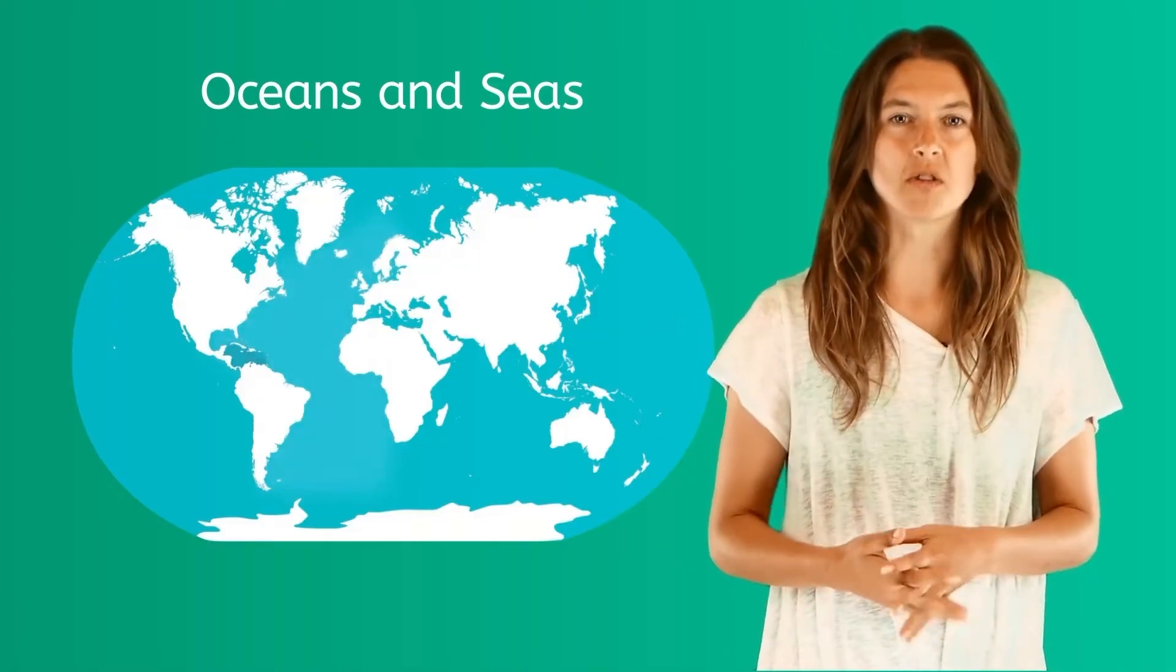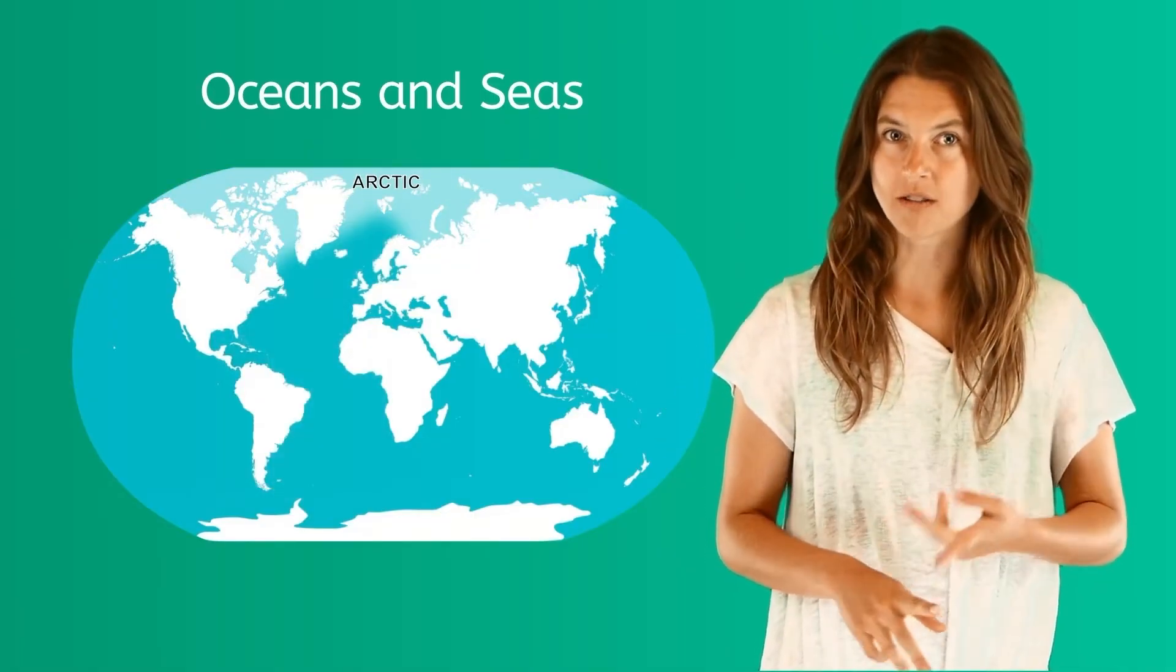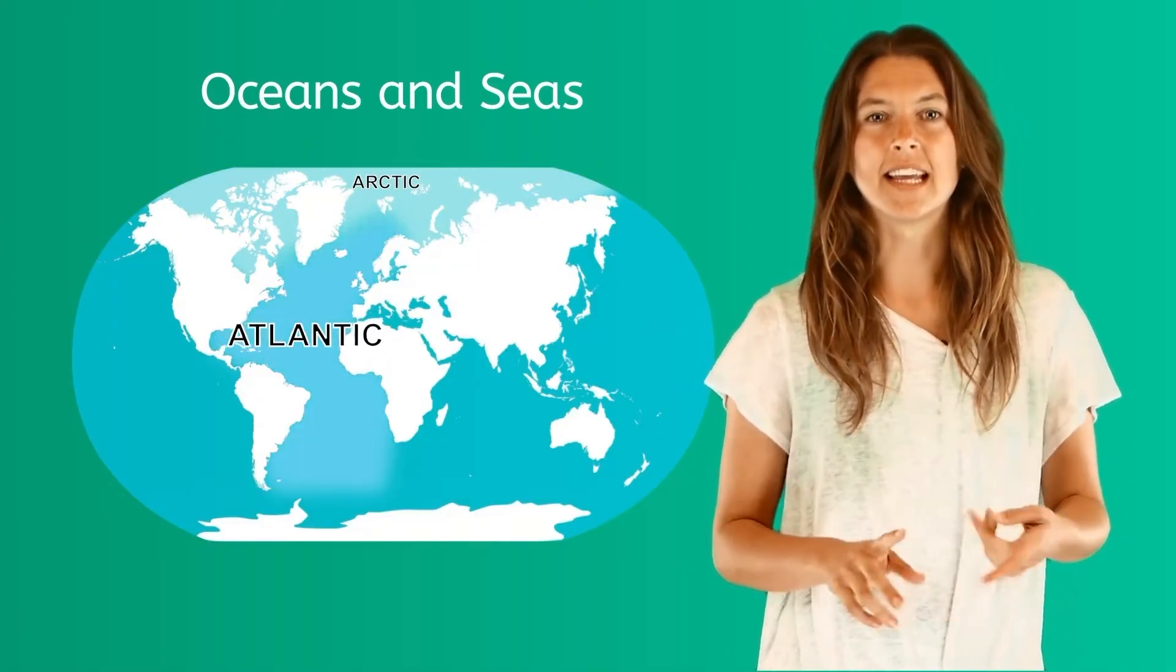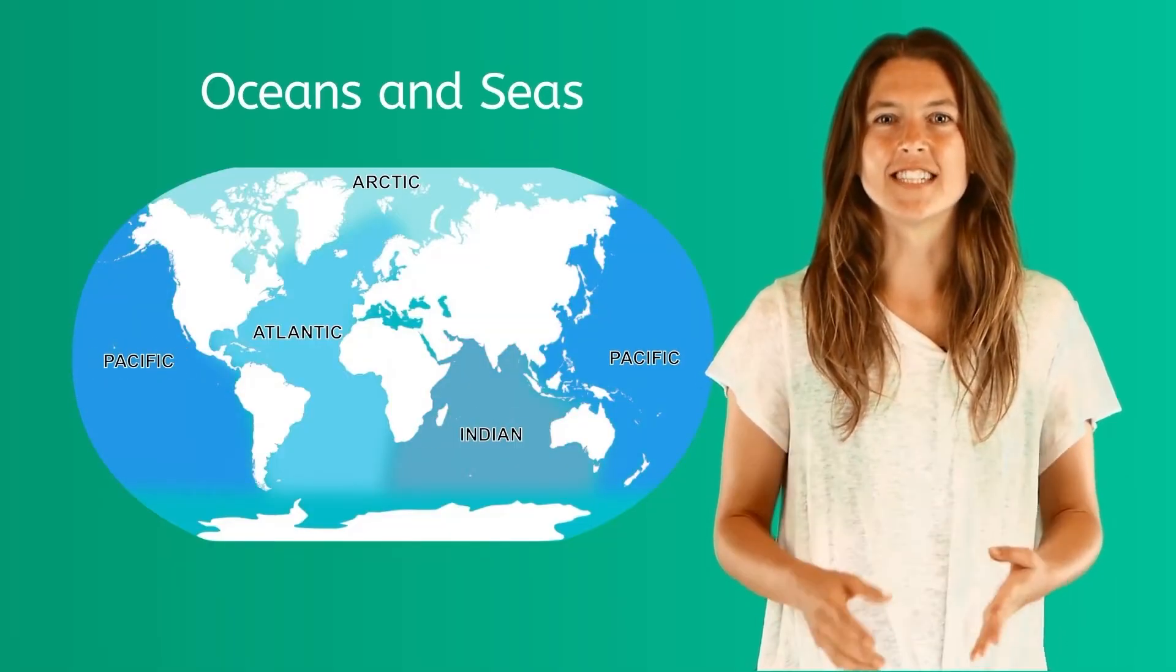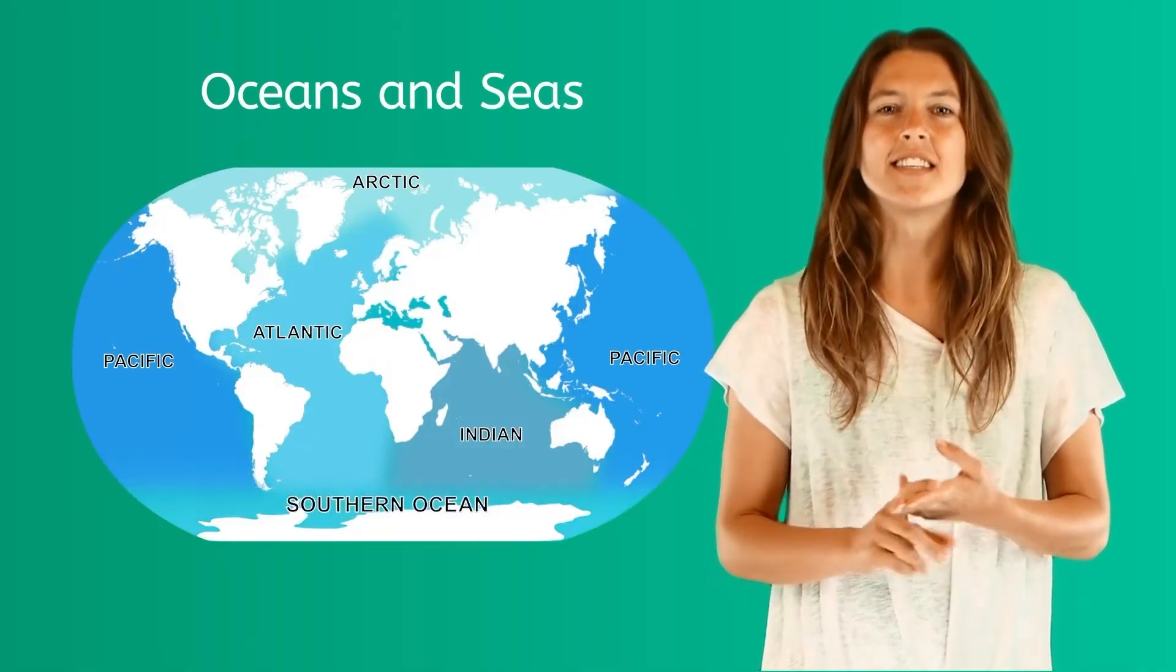There are five oceans in the world. The Arctic Ocean, which is the smallest ocean, the Atlantic Ocean, the Indian Ocean, the Pacific Ocean, which is the largest, and the Southern Ocean.